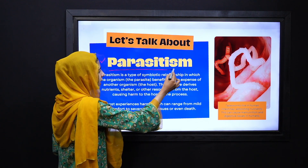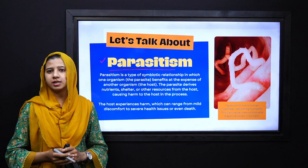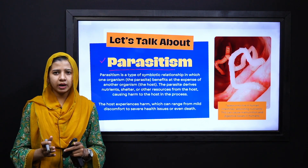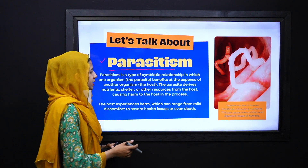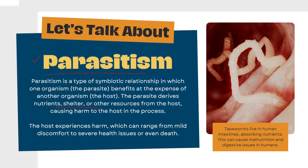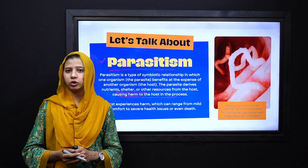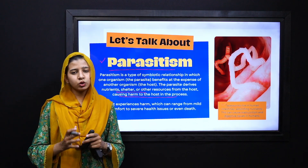Next, if we talk about the third relation, that is parasitism. This is a type of symbiotic relationship in which one partner gets benefited while the other is harmed. For example, tapeworms present in the intestine of humans absorb nutrition, but as a result cause digestive issues or malnourishment to the human host.